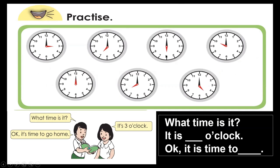What time is it? It's six o'clock — it's time to get up. What time is it? It's ten o'clock — it's time to go to bed. What time is it? It's twelve o'clock — it's time to have lunch. What time is it? It's eight o'clock — it's time to go to school. What time is it? It's five o'clock — it's time to have dinner.